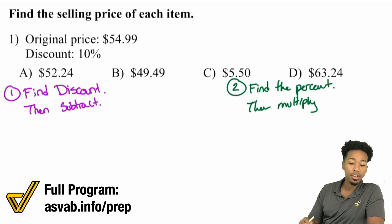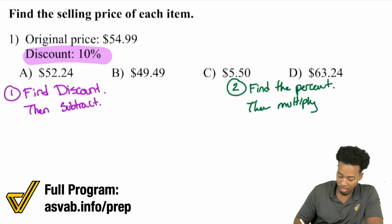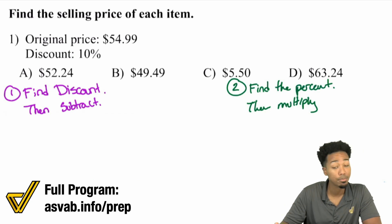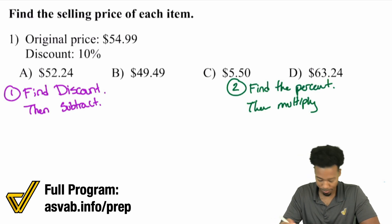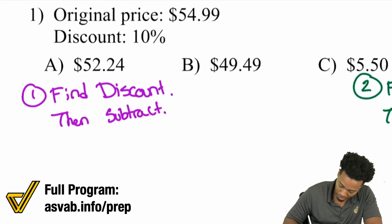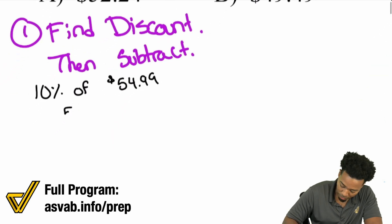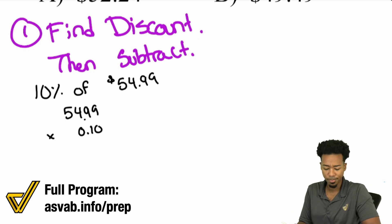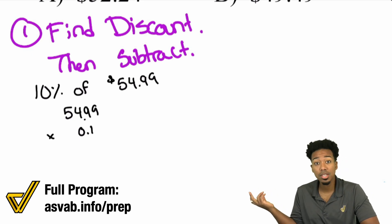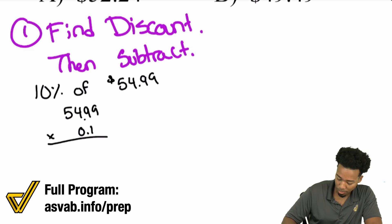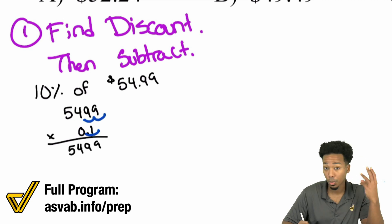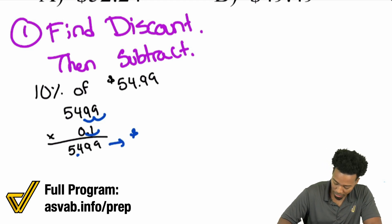With method number one, find the discount and then subtract. We're taking a 10% discount, so figure out what 10% of $54.99 is and then subtract it. $54.99 times 10%, or 0.10, which is the same as 0.1. Finding 10% is easy - you have the same exact number, 5, 4, 9, 9, but with three decimal places instead of two. That's $5.49, or we can say $5.50.